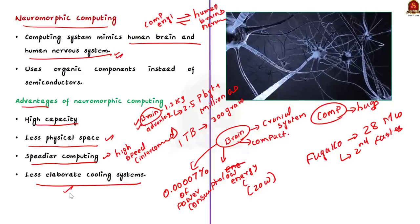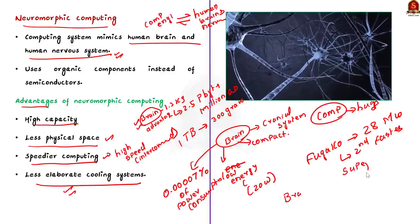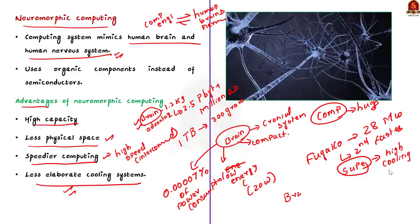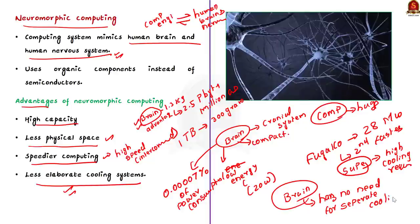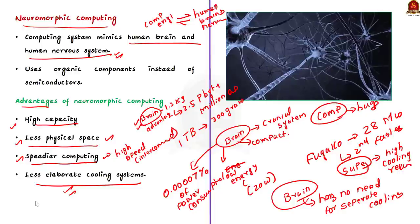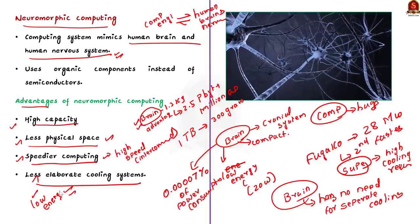The last major advantage is that computers designed using neuromorphic systems will require very little cooling. Supercomputers as they exist today need an elaborate cooling system, and most of their power consumption goes toward cooling. But our brain sits in the cranial system without any elaborate cooling and keeps its heat at a moderate 37 degrees Celsius. To summarize the advantages: higher storage capacity, less physical space, speedier computing, low energy consumption, and no need for elaborate cooling.